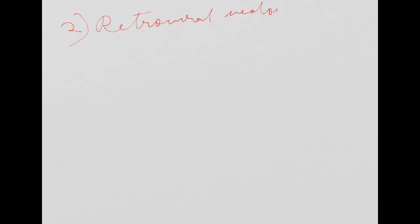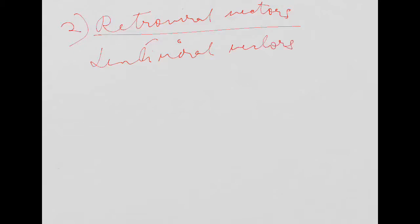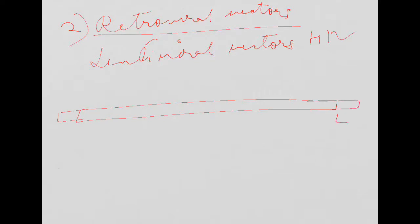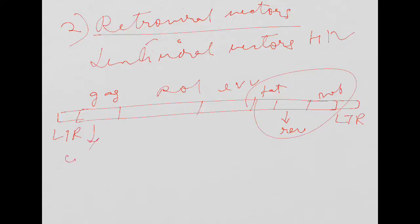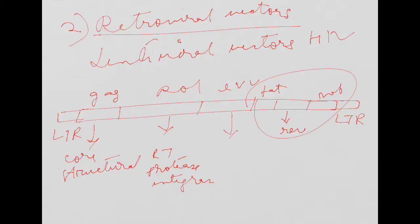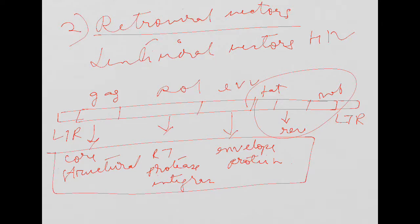The second type of viral vector is the retroviral vector. An example of a retroviral vector is the lentiviral vector, such as HIV. The genome structure has LTR sequences on both sides and genes including GAG, POL, ENV, REV, TAT, and NEF. GAG produces the core structural proteins, POL produces enzymes like reverse transcriptase, protease, and integrase, and ENV is responsible for production of the envelope protein.